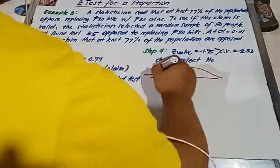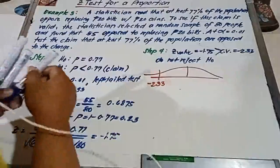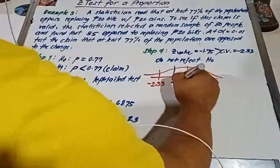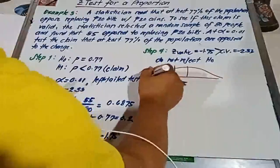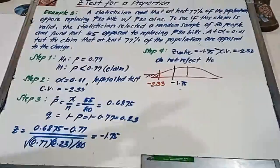Because it is outside of the rejection region. The rejection region is at negative 2.33. Our value is negative 1.75, which is in the acceptance region. Do not reject the null hypothesis.